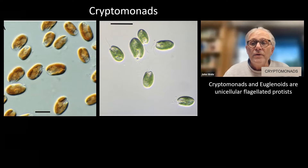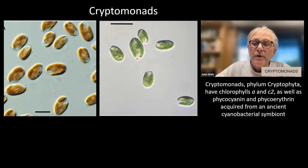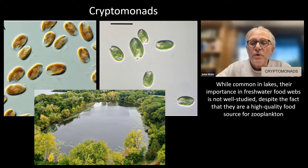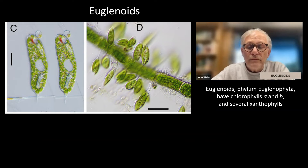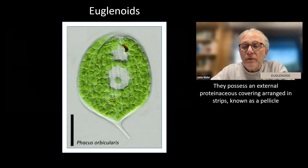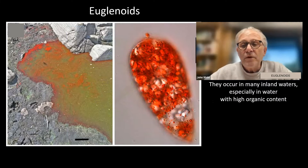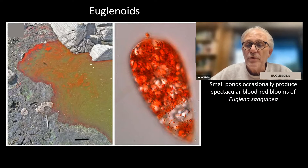Cryptomonads and euglenoids are unicellular flagellated protists. Cryptomonads, phylum Cryptophyta, have chlorophylls A and C2, as well as phycocyanin and phycoerythrin acquired from an ancient cyanobacterial symbiont. While common in lakes, their importance in freshwater food webs is not well studied, despite the fact that they are a high-quality food source for zooplankton. Euglenoids, phylum Euglenophyta, have chlorophylls A and B, and several xanthophylls. They possess an external proteinaceous covering arranged in strips known as a pellicle. They occur in many inland waters, especially in water with high organic content. Small ponds occasionally produce spectacular blood-red blooms of Euglena sanguinea.